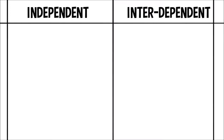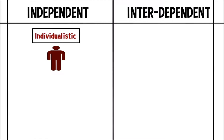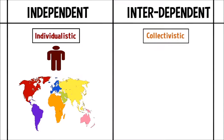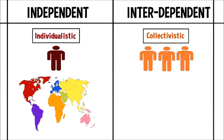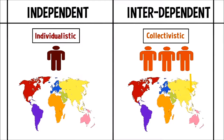We're likely to see individuals with an independent self-construal in individualistic cultures, who prioritize the individual over the entire group. Examples would include America or Canada. Whereas individuals with an interdependent self-construal are generally part of collectivistic cultures, who emphasize the needs and goals of the group as a whole over the needs and desires of each individual. This can be observed in the UAE and Southeast Asia.